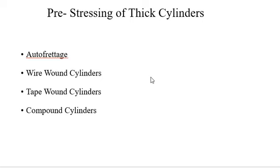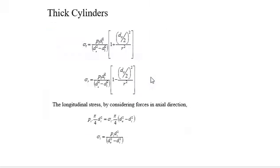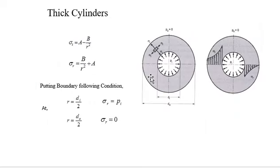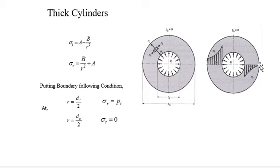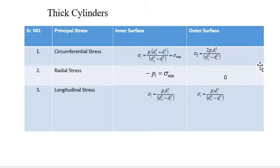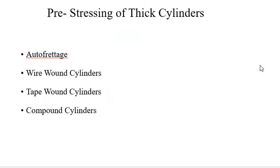As we know from the previous lecture, and as you can see from this diagram, sigma_t is maximum at the inner surface and comparatively less at the outer surface. Sigma_r is maximum at the inner surface and becomes zero at the outer surface. We will now see the different methods of pre-stressing of thick cylinders.